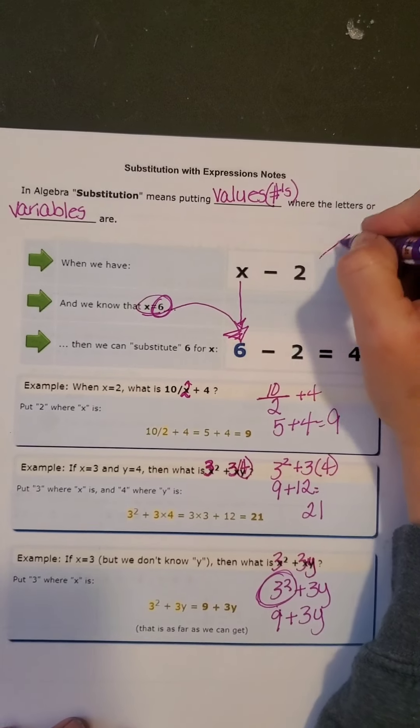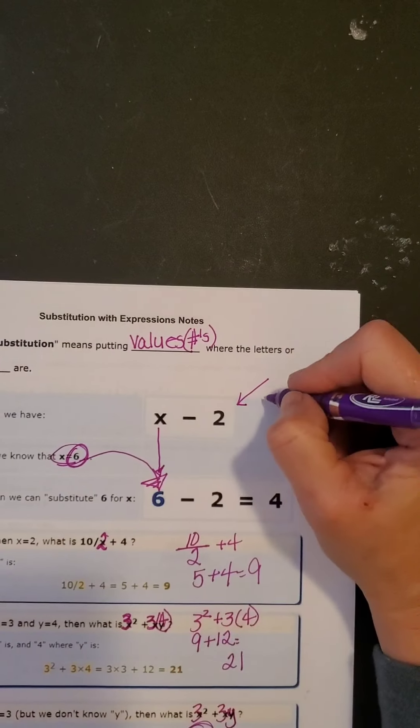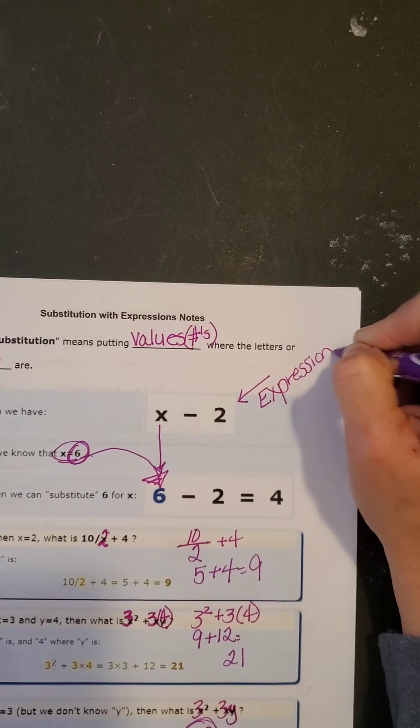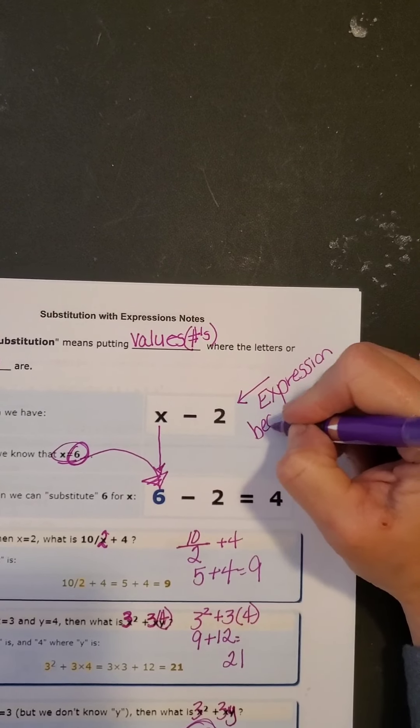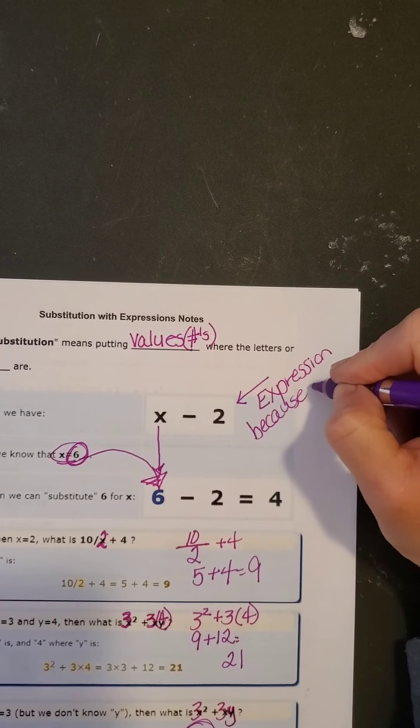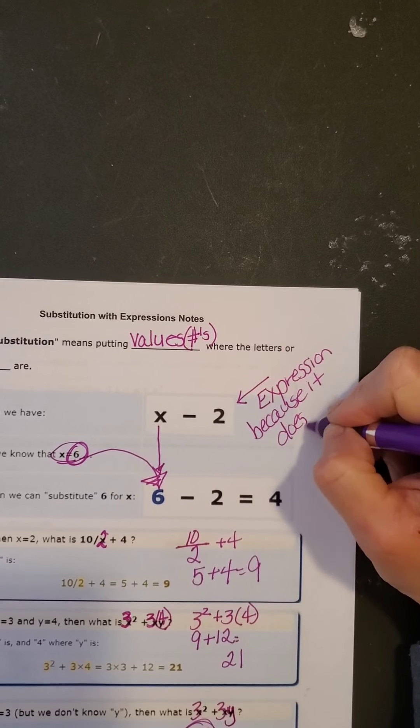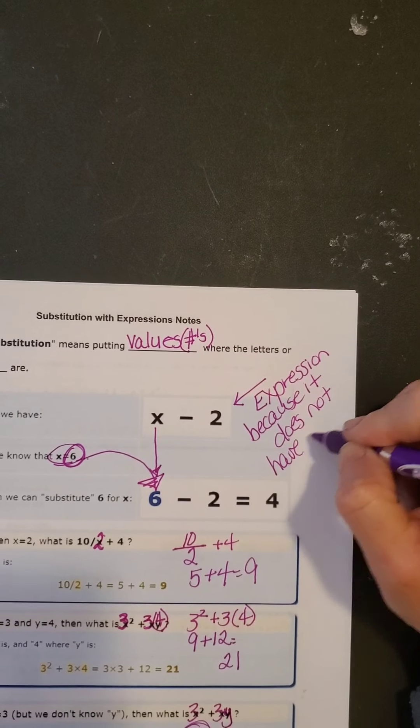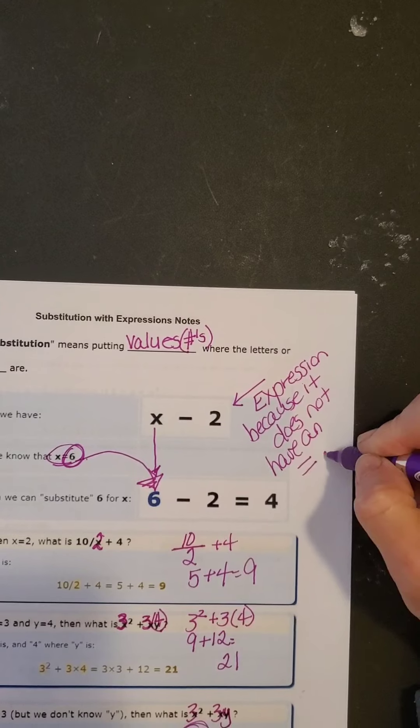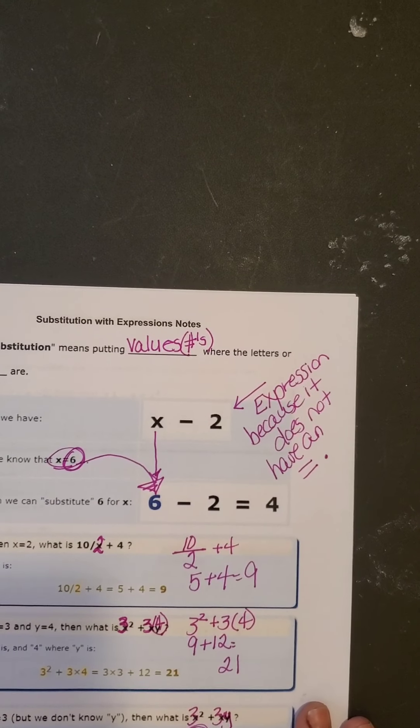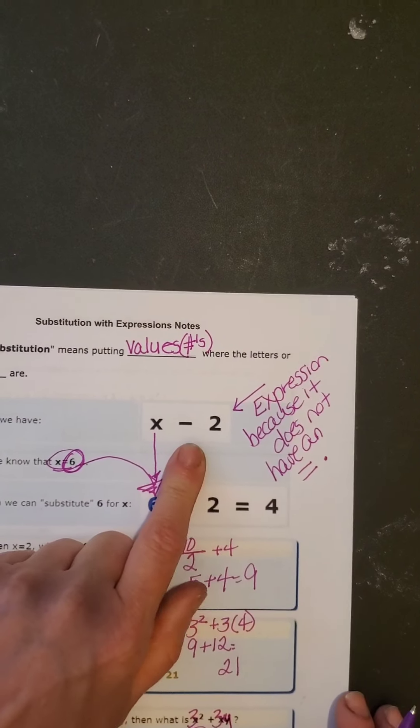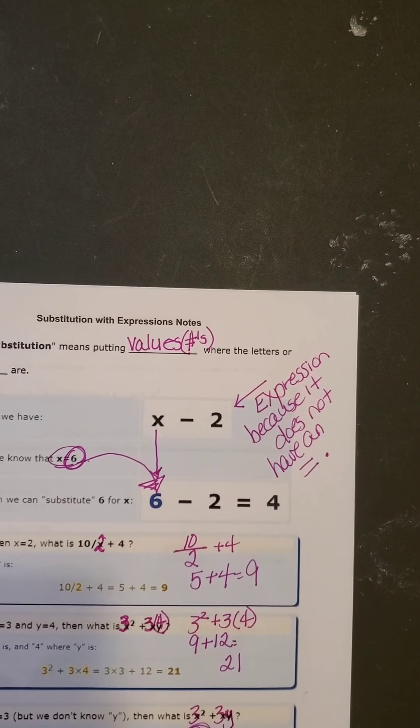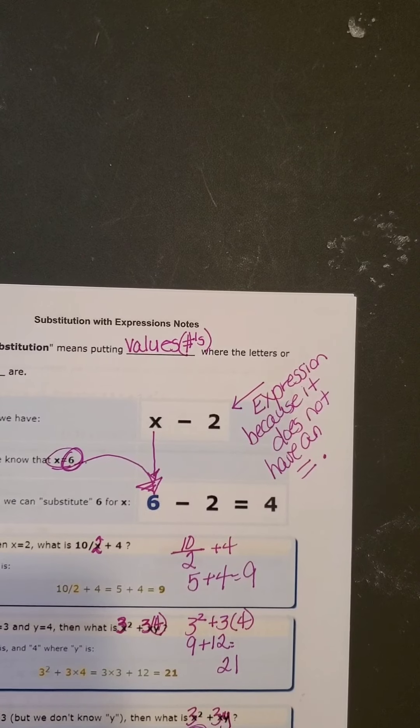These are expressions. This is an expression. It does not have an equal sign. That is an expression. There is no equal sign here. So we can't solve it. That is how expressions differ from equations.